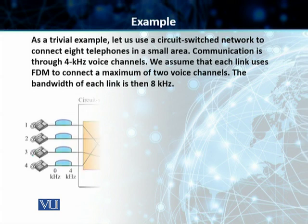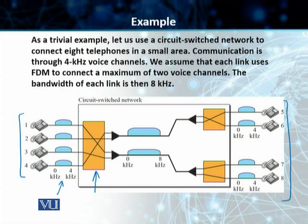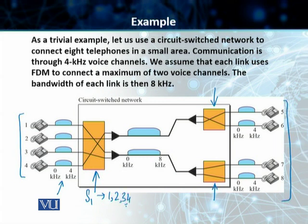I'll draw this for you. You have four telephone sets on the left-hand side communicating with four telephone sets on the right-hand side. Because these are analog signals, each has four kilohertz bandwidth. There is a switch on the sending end and multiple switches on the receiving end. Switch one is connected to telephone sets one, two, three, and four. Switch two serves telephone sets five and six, and the last switch serves sets seven and eight.